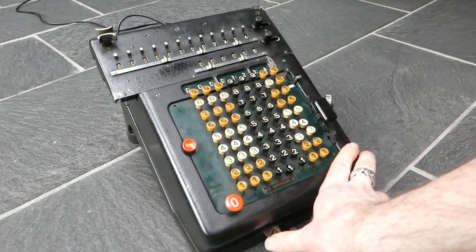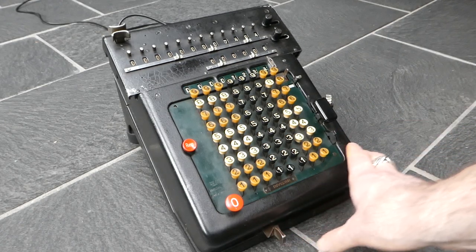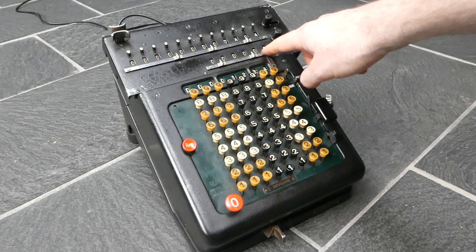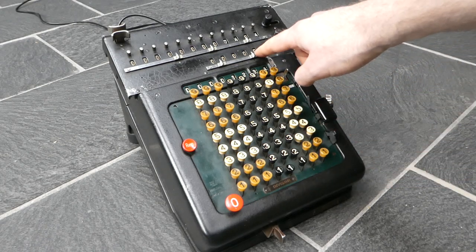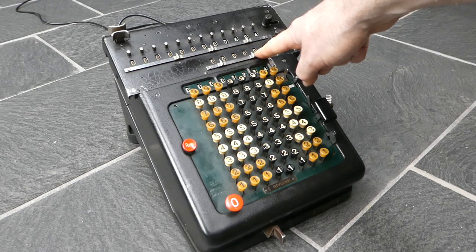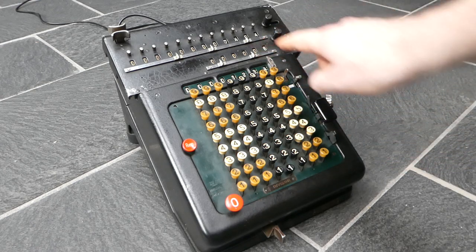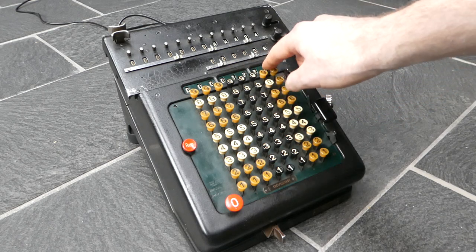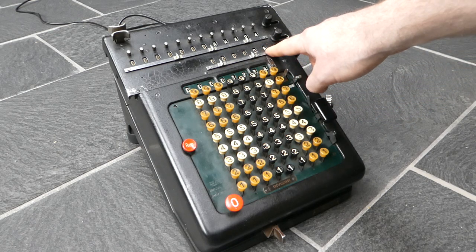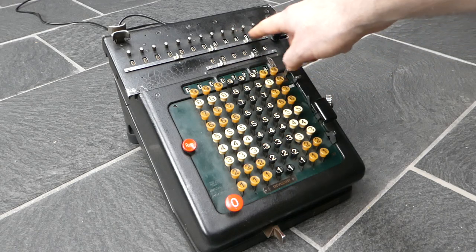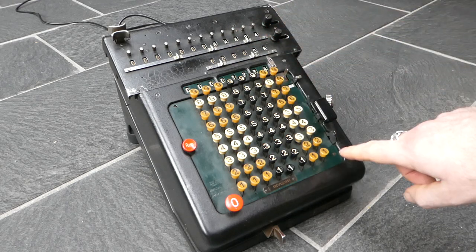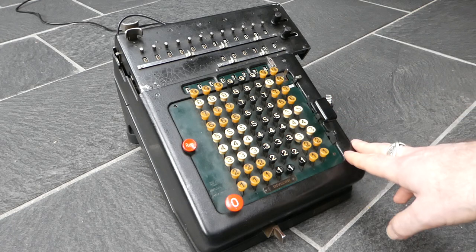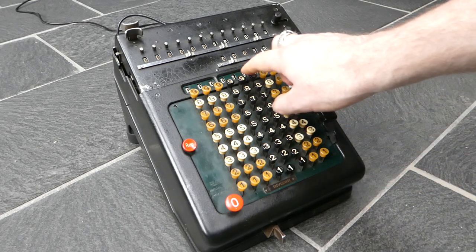You can then shift the carriage and hold the button down until you get the right digit here for the tens multiplication. So now I've multiplied this input number by 36. And the result is up here of course. 136 times the input.